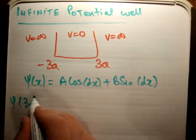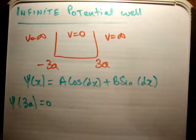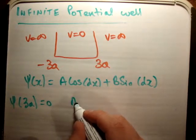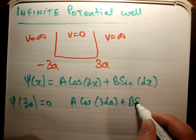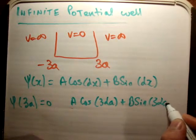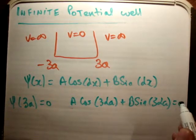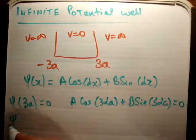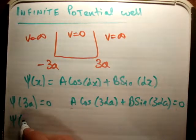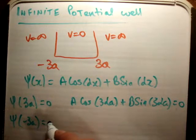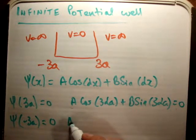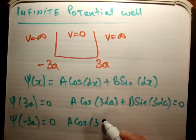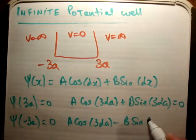ψ(3a), which we know equals zero because the particle cannot exist outside the well, gives us A cos(3λa) plus B sin(3λa) equals zero. Then we apply the boundary at negative 3a and find that A times the cosine of 3λa minus B times the sine of 3λa is equal to zero.